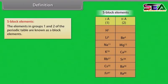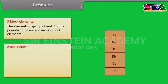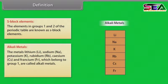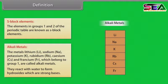The elements in group 1 and 2 of the periodic table are known as S-block elements. The metals lithium, sodium, potassium, rubidium, cesium and francium, which belong to group 1, are called alkali metals. They react with water to form hydroxides which are strong bases.